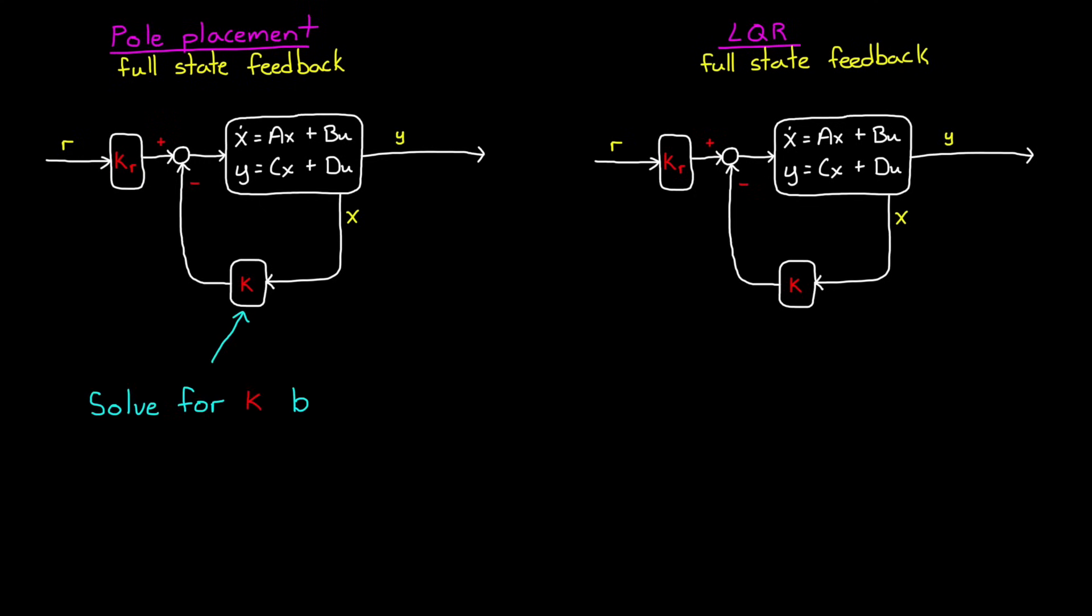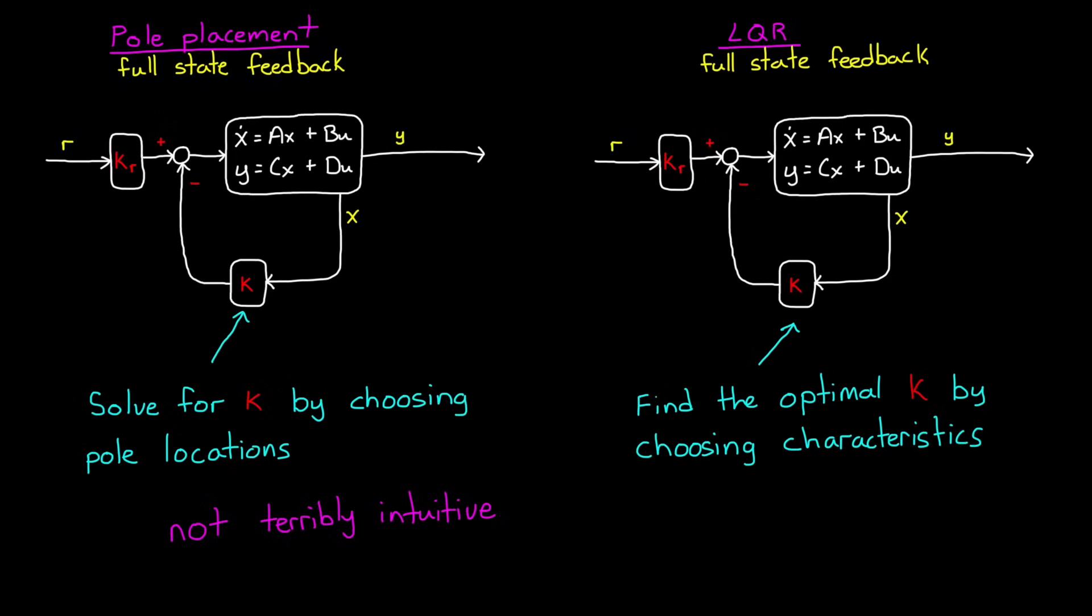With pole placement, we solved for K by choosing where we want to put the closed loop poles. We wanted to place them in a specific spot, and this was awesome. But one problem with this method is figuring out where a good place is for those closed loop poles, and this might not be terribly intuitive for high order systems and systems with multiple actuators. So with LQR, we don't pick pole locations. We find the optimal K matrix by choosing closed loop characteristics that are important to us, specifically how well the system performs and how much effort does it take to get that performance.